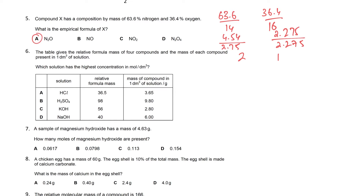A table gives the relative formula mass of four compounds and the mass of each in 1 dm³. To find concentration we calculate moles = mass/Mr: 3.65/36.5 = 0.1, 9.8/98 = 0.1, 2.8/Mr = 0.05, and the last gives 0.15. The compound with 0.15 mol/dm³ has the highest concentration.